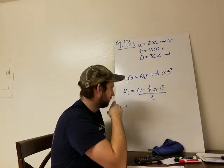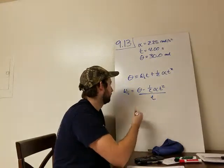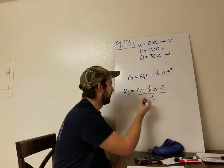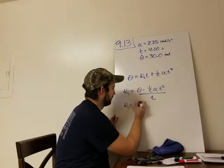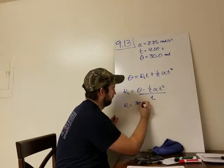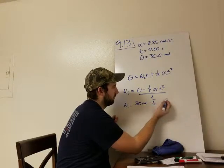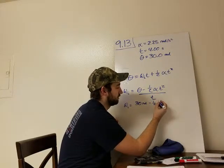Now that we've done that, we have all the information we need. So let's just plug in the numbers we have. We know that theta is 30 radians, so it's going to be 30 minus one-half. Our alpha is 2.25 radians per second squared.